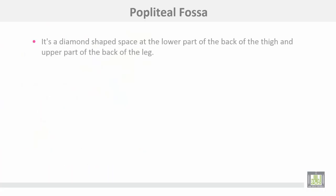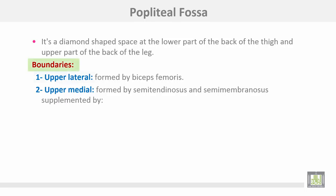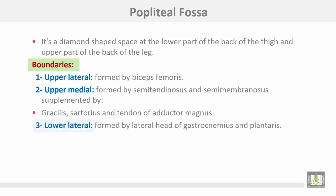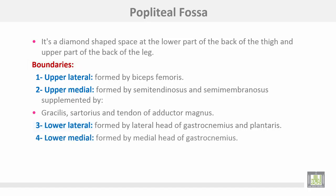The popliteal fossa is a diamond-shaped space at the lower part of the back of the thigh and the upper part of the back of the leg. Boundaries: upward and laterally formed by biceps femoris muscle; upward and medially formed by semitendinosus and semimembranosus, supplemented by gracilis, sartorius, and tendon of the adductor magnus. Lower lateral boundaries formed by lateral head of gastrocnemius and plantaris. Lower medial boundary formed by medial head of gastrocnemius muscle.